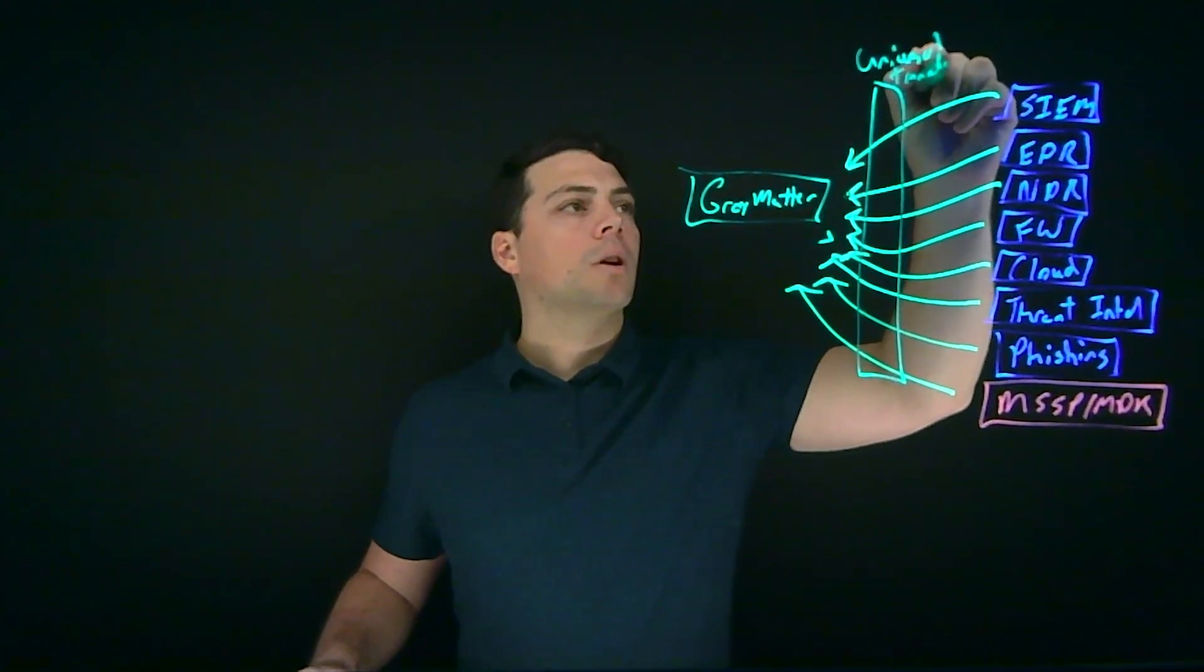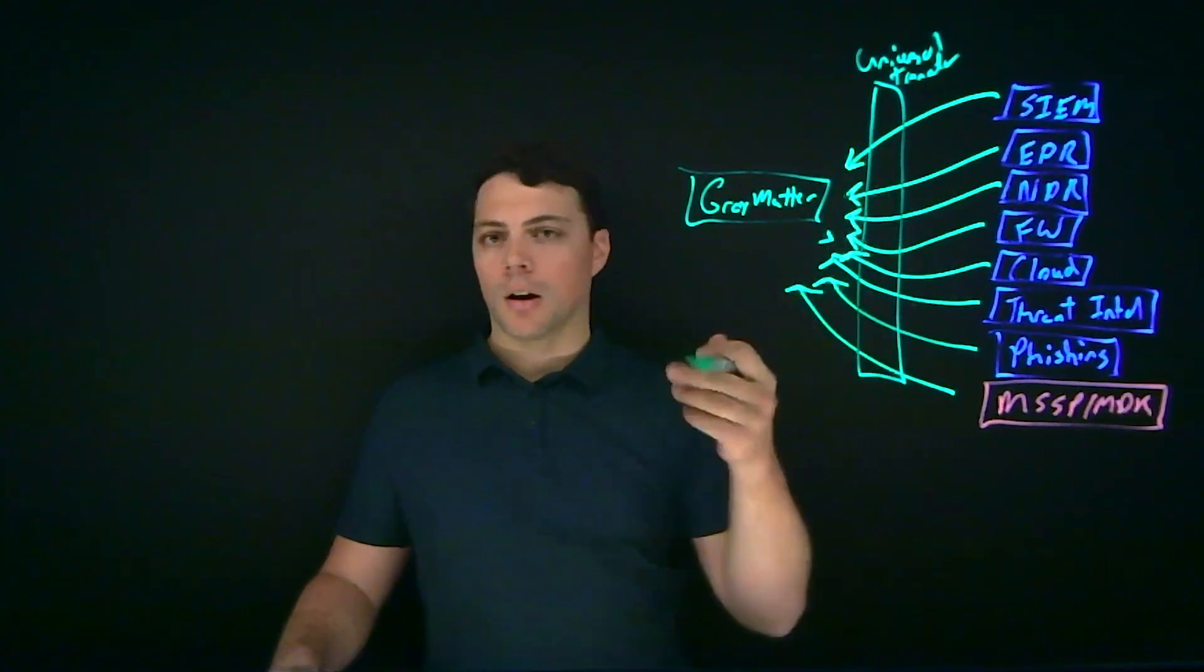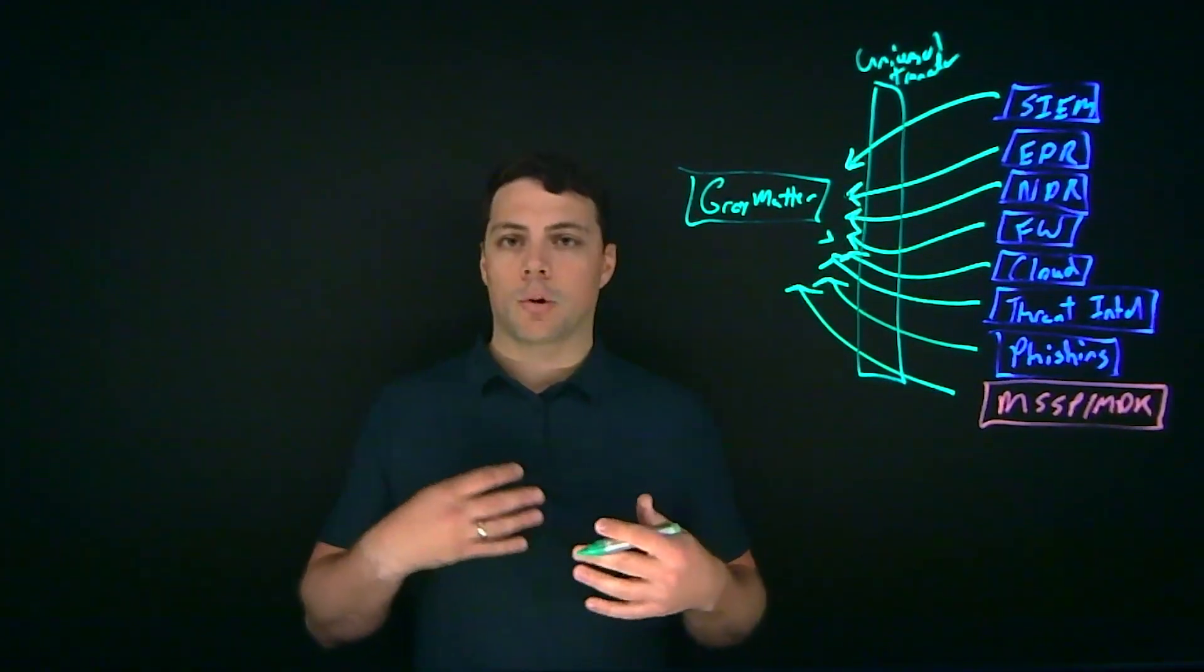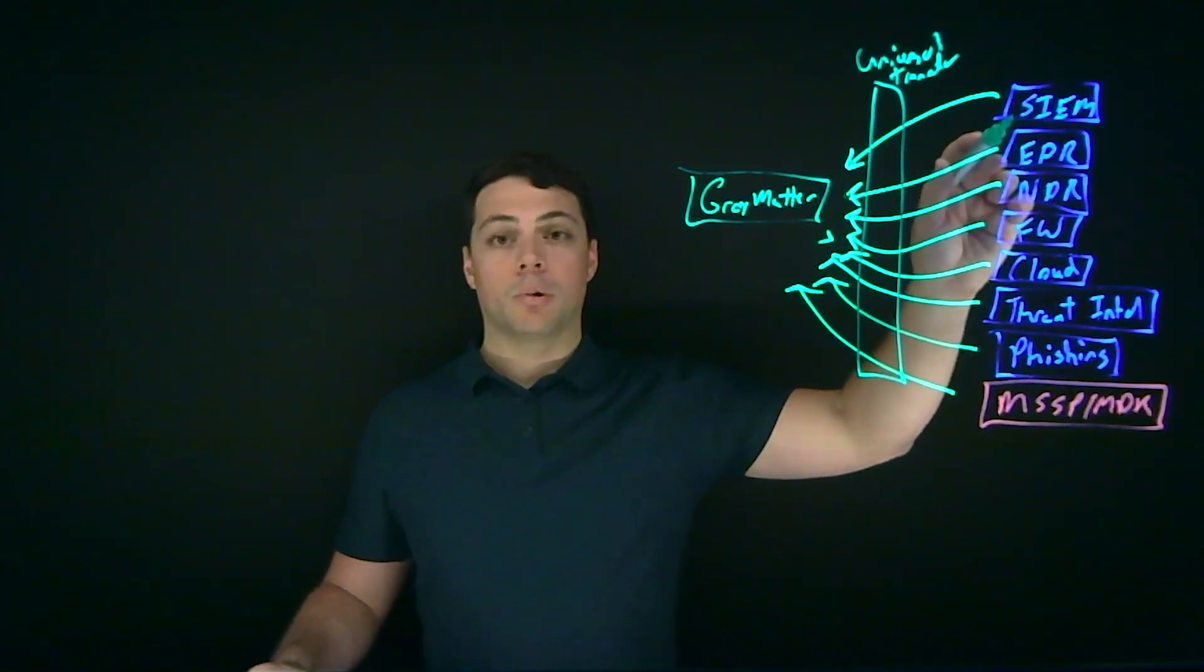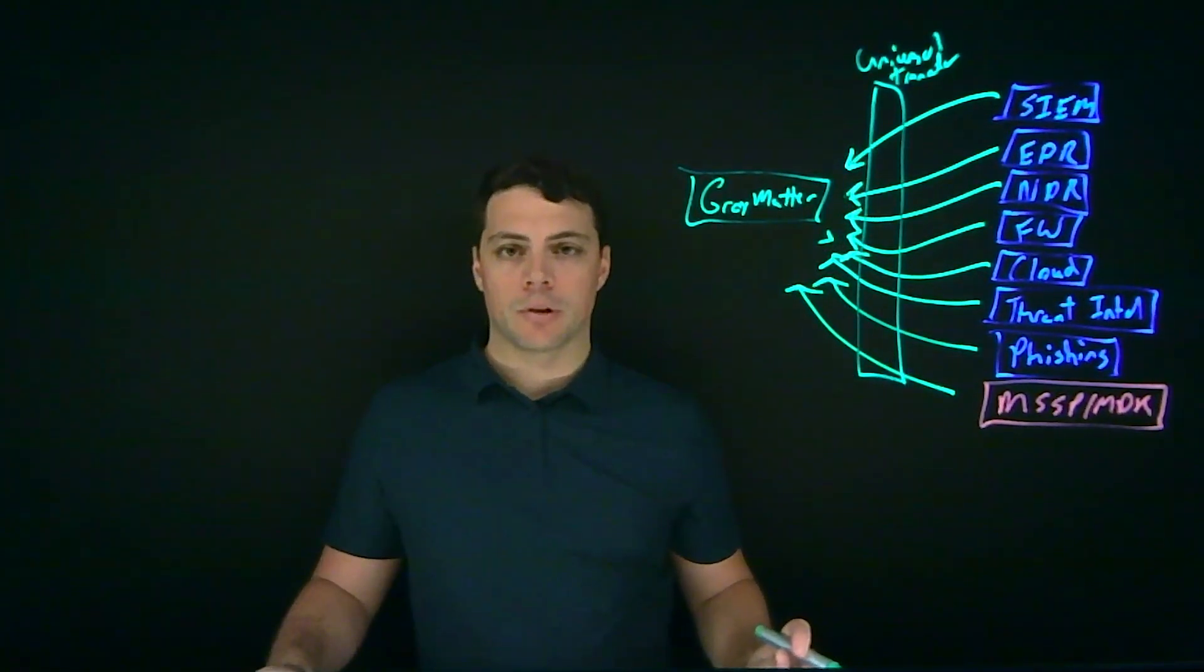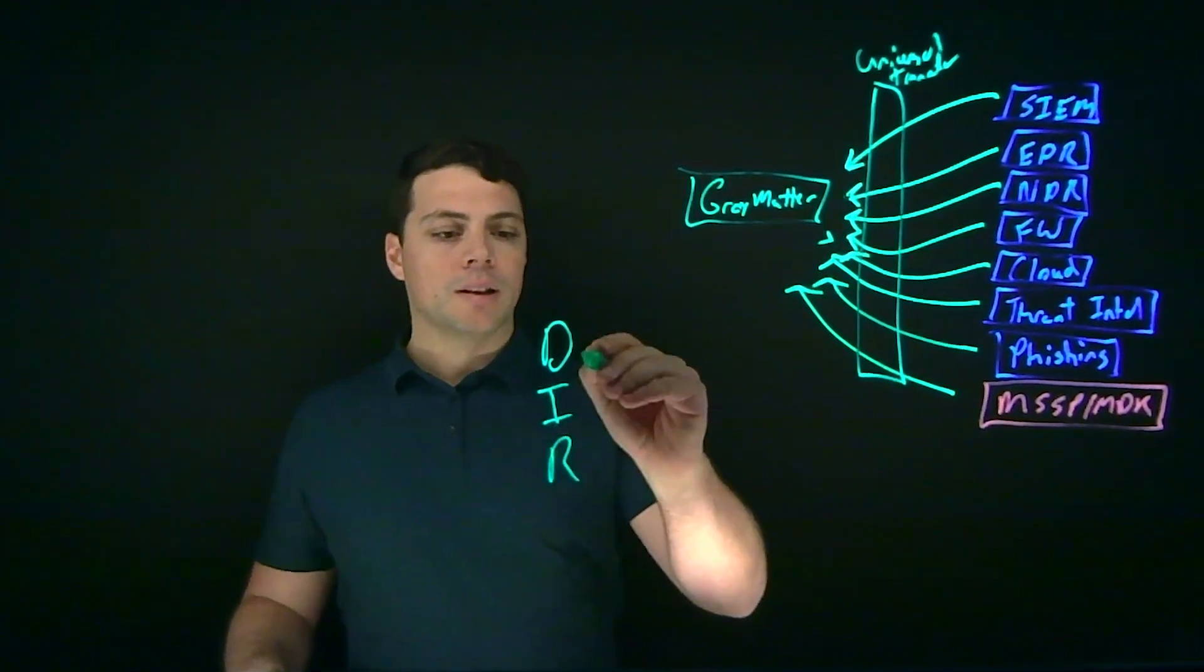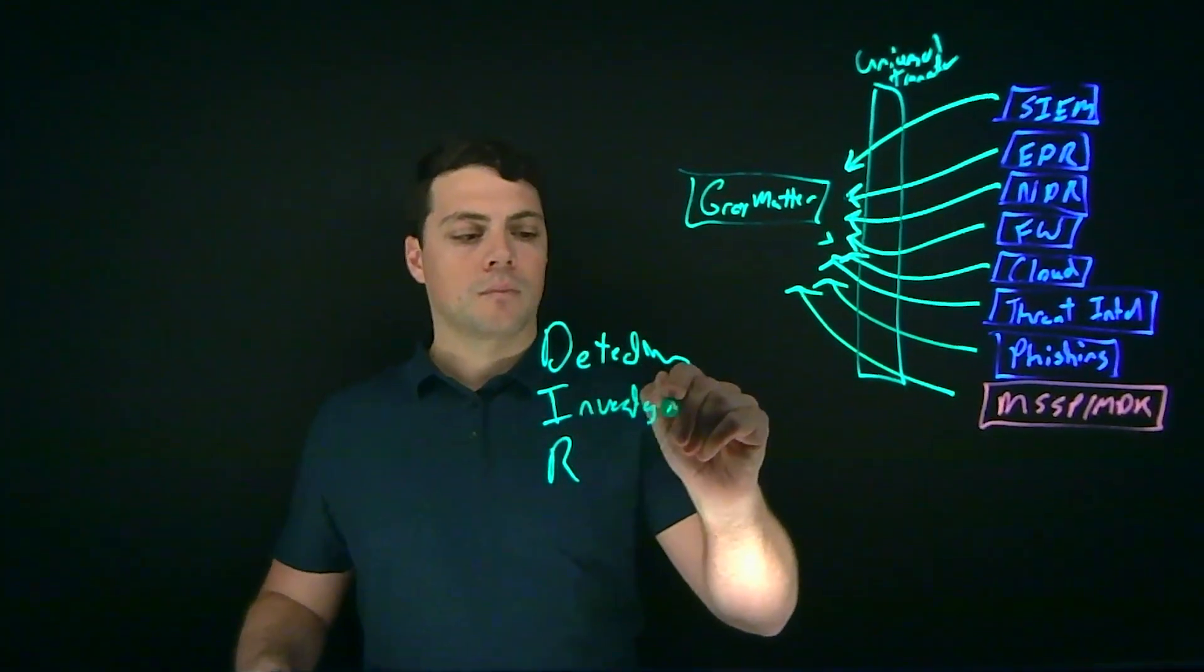Essentially what it does is it connects to our customers' environments via a bi-directional API. Does this through a unique piece of technology called the Universal Translator, which is patented. And essentially what it allows for us to do is to communicate in a natural language with SIM and EDR. So a lot of customers have invested in Splunk, which is a fantastic technology, got a ton of great data in it, but you got to teach your teams how to use and how to query in SPL. Gray Matter, if entered in a natural language, will actually run the SPL query for you. And then as it's returned in SPL, it will actually translate it back into a natural language within Gray Matter.